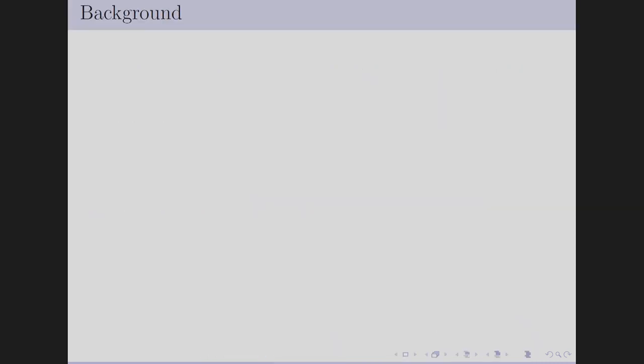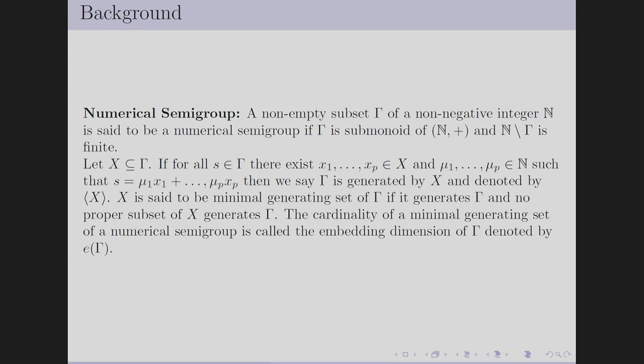For background: a numerical semigroup is a non-empty subset of the non-negative integers such that it is a submonoid of the natural numbers and its complement is finite. A set X is called a generating set of a numerical semigroup Γ if every element can be written as a linear combination of elements of X over the natural numbers. The minimal generating set X has no proper subset that generates Γ, and the cardinality of X is called the embedding dimension of the numerical semigroup.